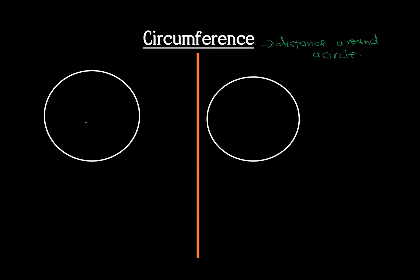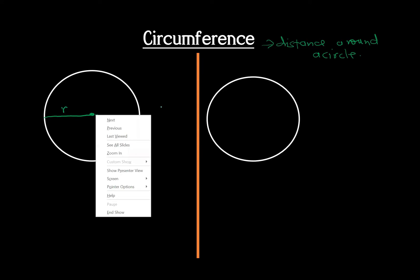Given a circle like this, if this is the center, the distance from any part of the circle — that is what we call circumference, the distance around the circle. From the circumference to the center, you have what we call radius. And this is also known as radius.